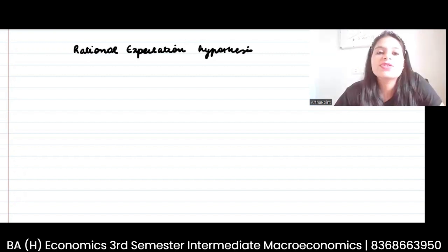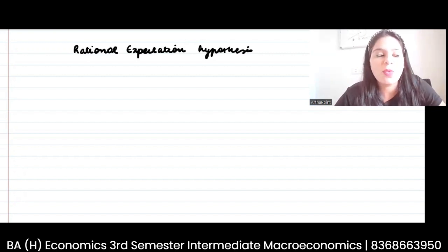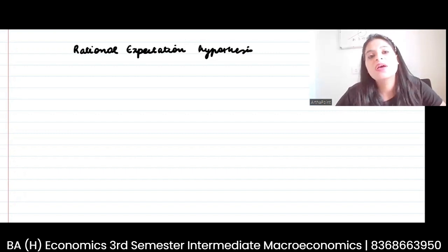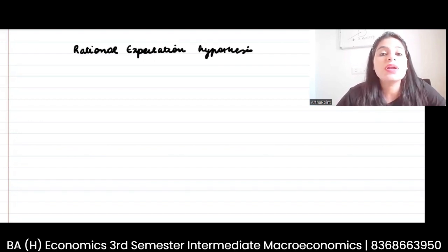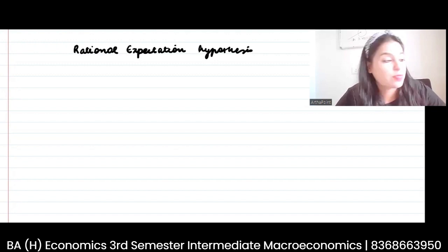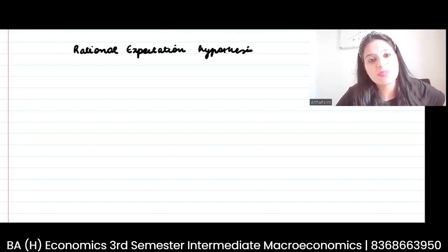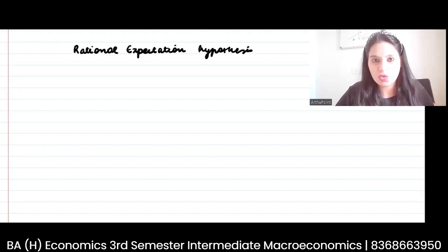Adaptive Expectation Hypothesis suggested that whatever variable you are talking about, whenever you form an expectation about that variable, it will depend only on its past values. So price today will depend on what was my price expectation yesterday, the day before yesterday, and so on.